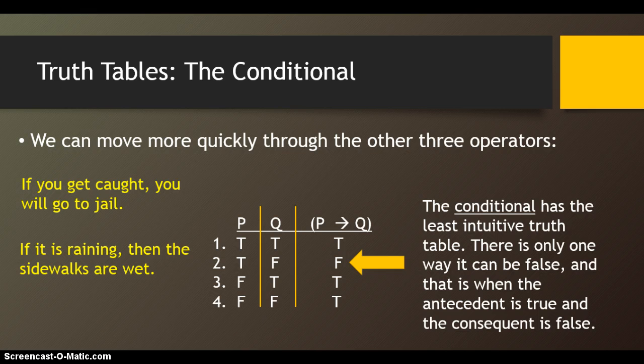Here's another example: if it's raining, then the sidewalks are wet. This can be true even if it's not raining and the sidewalks aren't wet. It can also be true in cases where it's not raining but the sidewalks are wet for some other reason — the sprinklers are on, someone poured water on it, or the snow is melting. It's still true that if it's raining the sidewalks are wet. But if it's true that it's raining and false that the sidewalks are wet — for example if the sidewalks are covered — then the conditional is false.